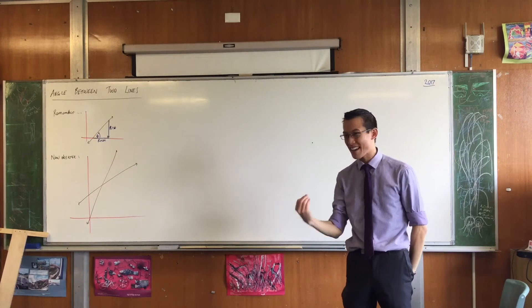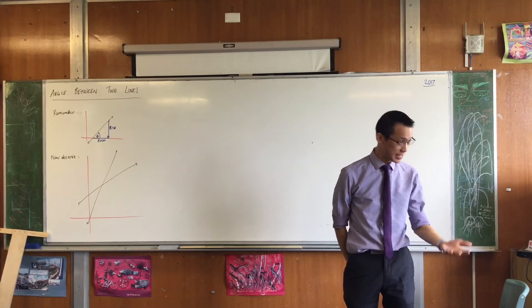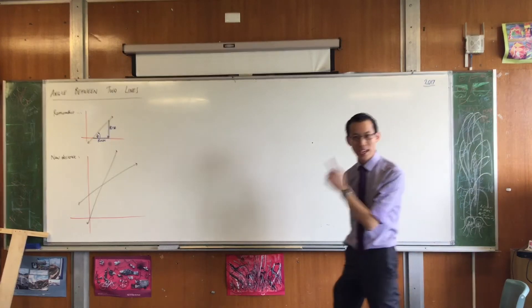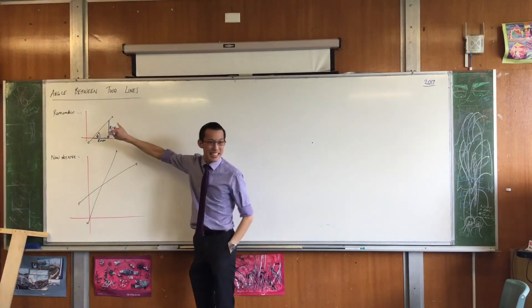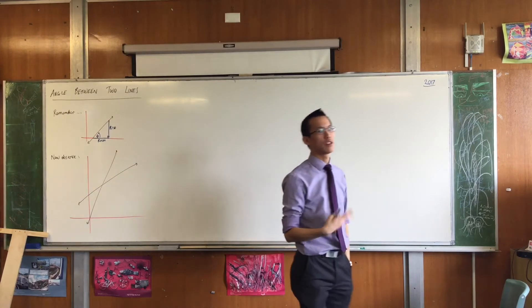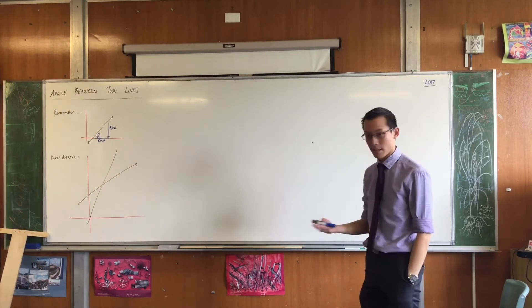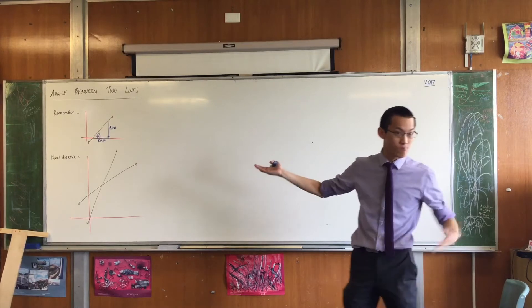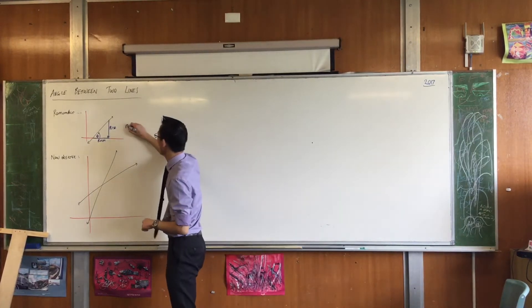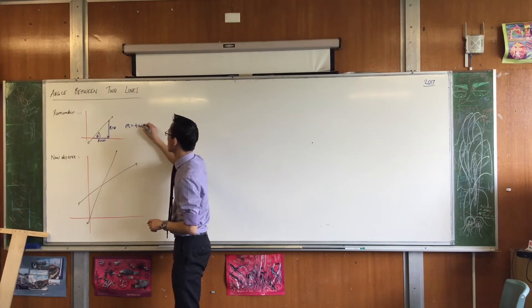Which trigonometric ratio connects rise and run? It's tan theta, isn't it? So here, the gradient by definition is rise over run, but because it also lives in a right-angled triangle, that means that the gradient is not just rise over run, it's tan theta. So this is a familiar result. You've seen this before.